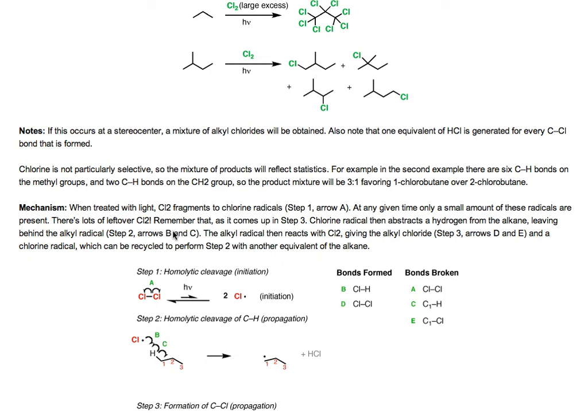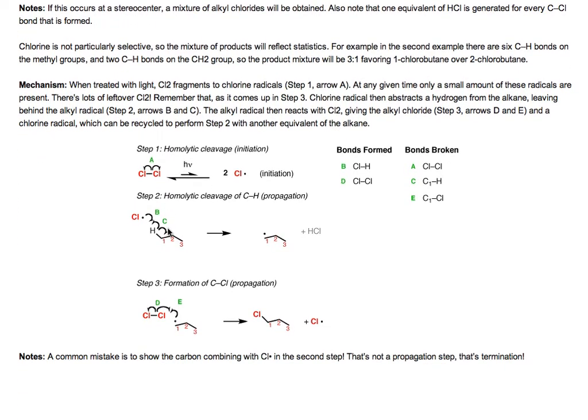Let's talk about the mechanism of this reaction and why we actually need to shine light upon chlorine gas. The chlorine-chlorine bond is fairly weak, so when you treat chlorine with light, the photon has enough energy to promote an electron into the lowest unoccupied molecular orbital of chlorine, breaking the chlorine-chlorine bond homolytically to give two chlorine radicals. Only a little bit of chlorine radical is formed at any given time — we have a lot of excess chlorine gas remaining, which will be important for the third propagation step.